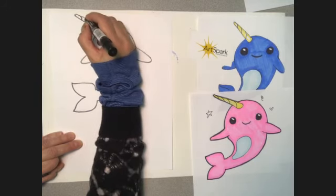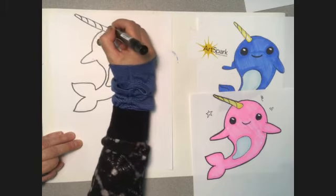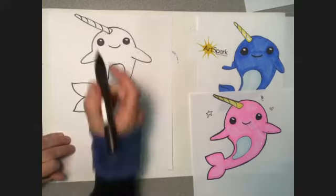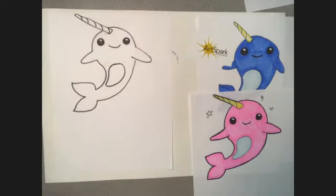And then for a finishing touch, a narwhal's horn has a spiral to it. So we want to add a couple of little spiral lines. These are curved lines that go down the horn. So that's our narwhal.